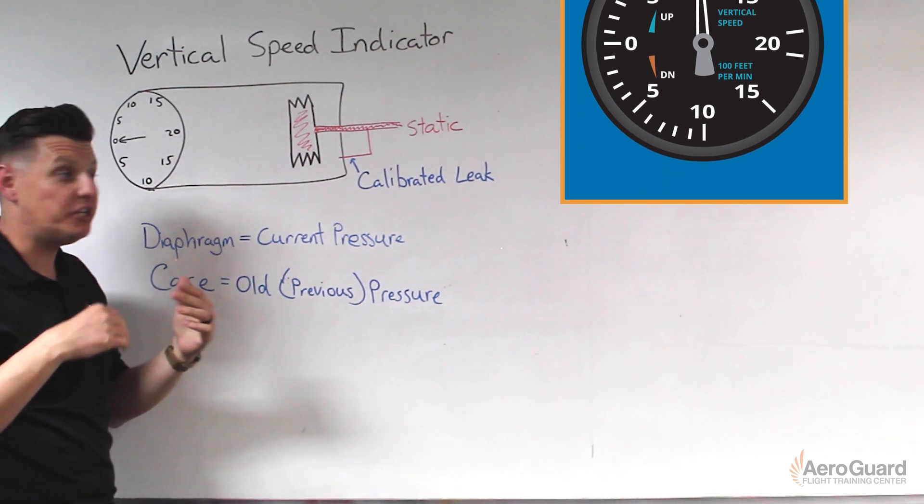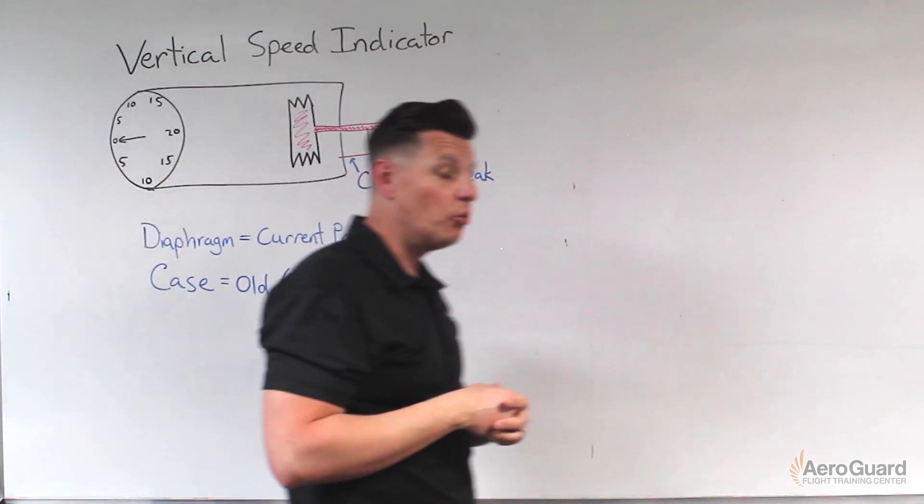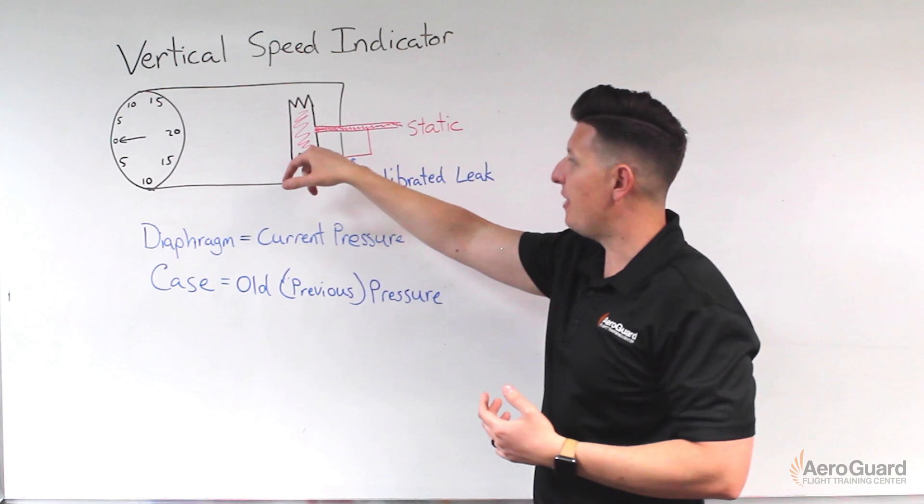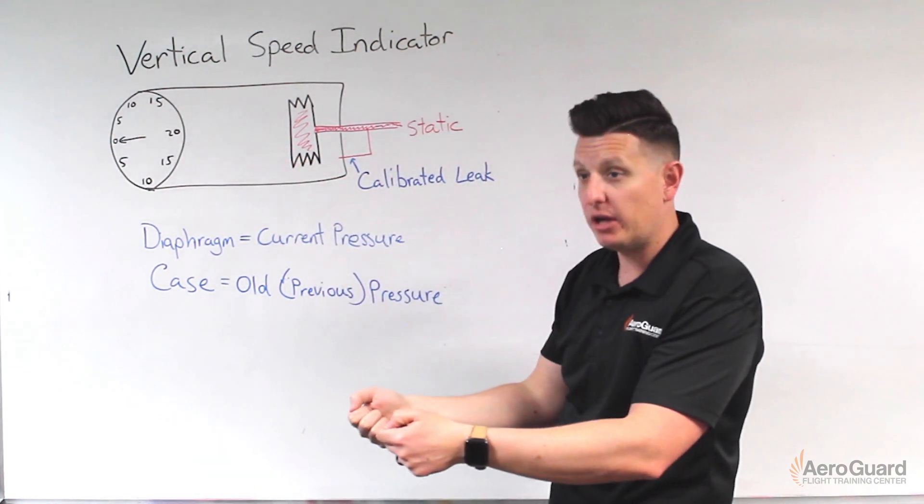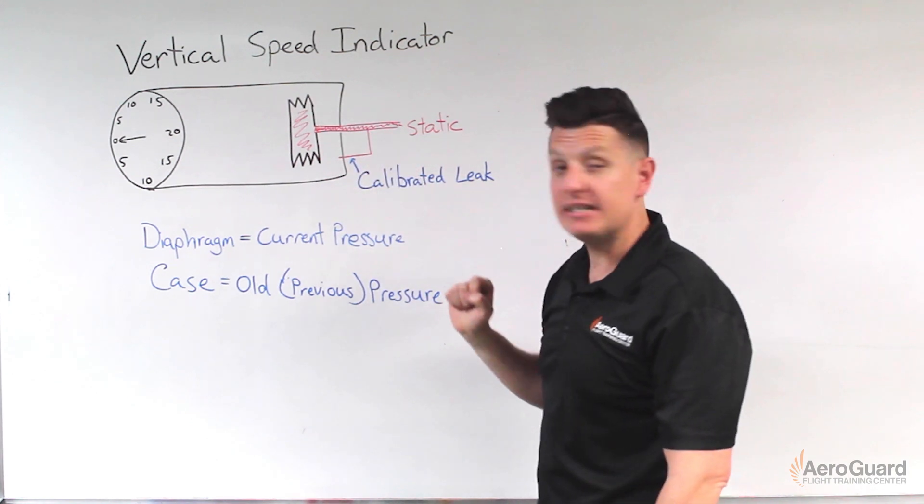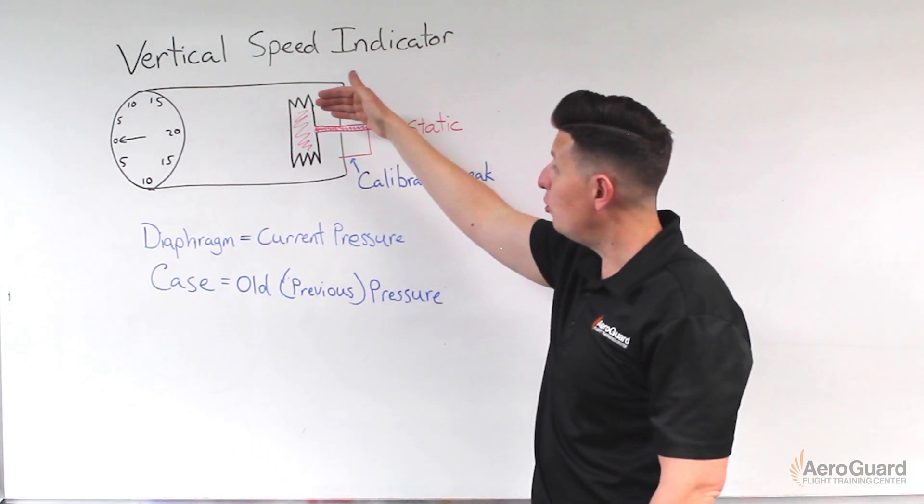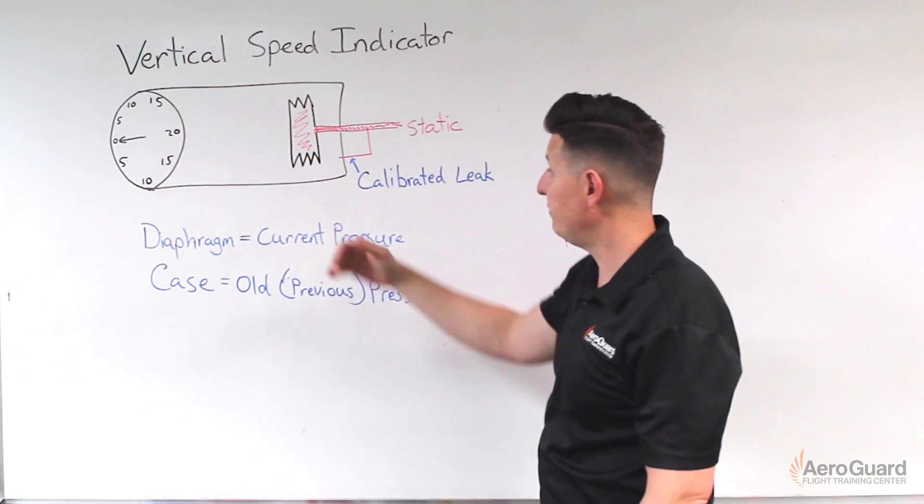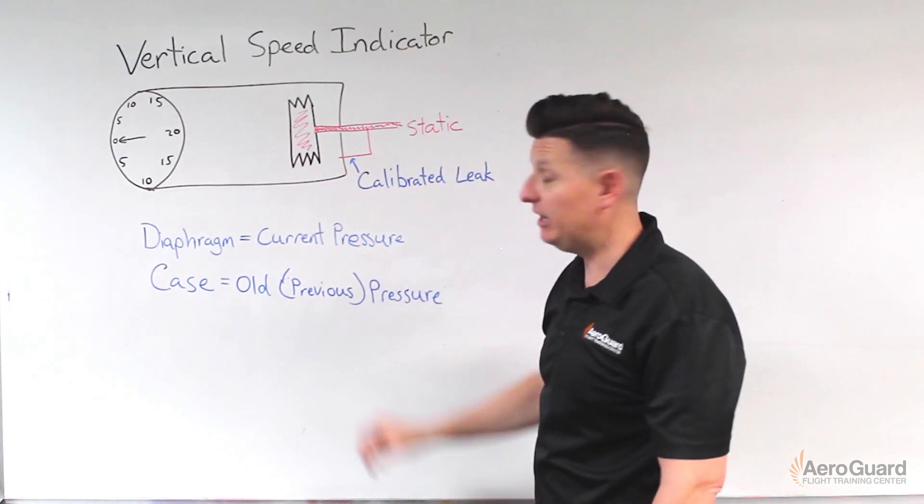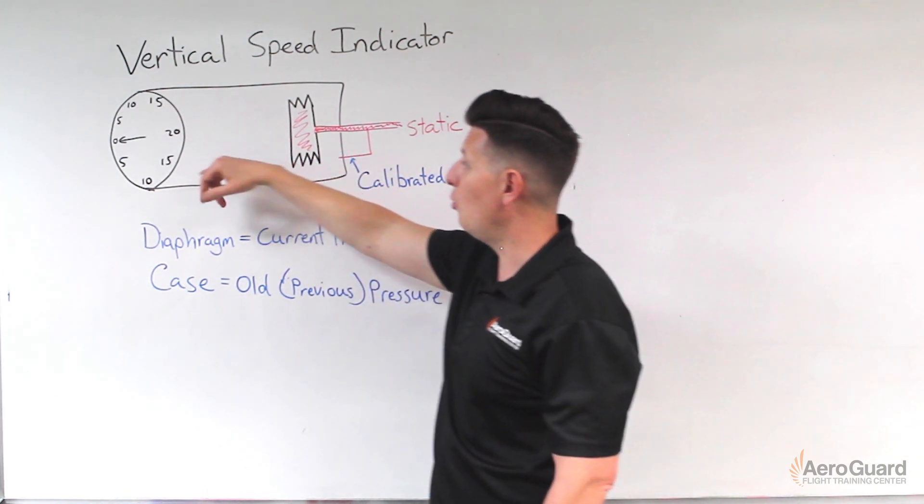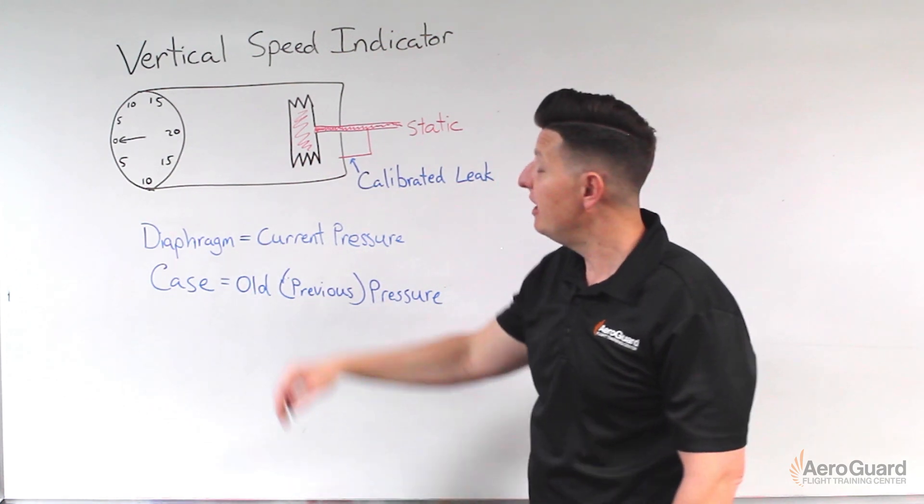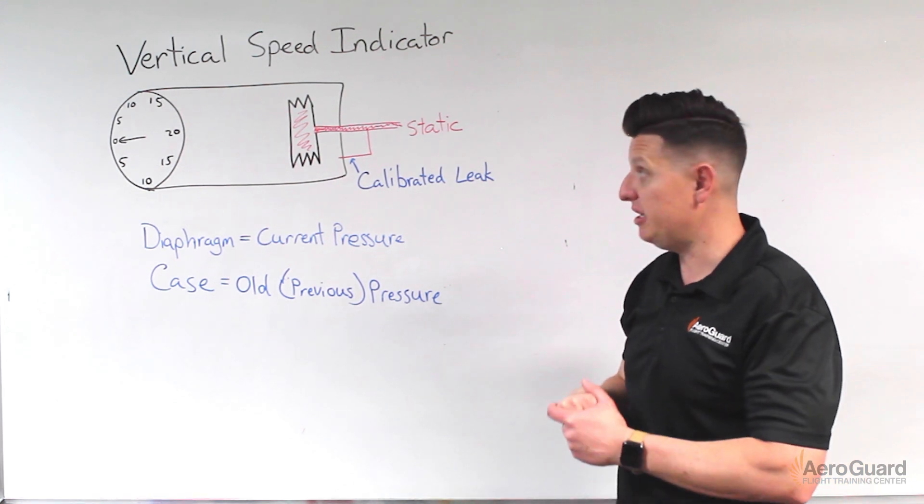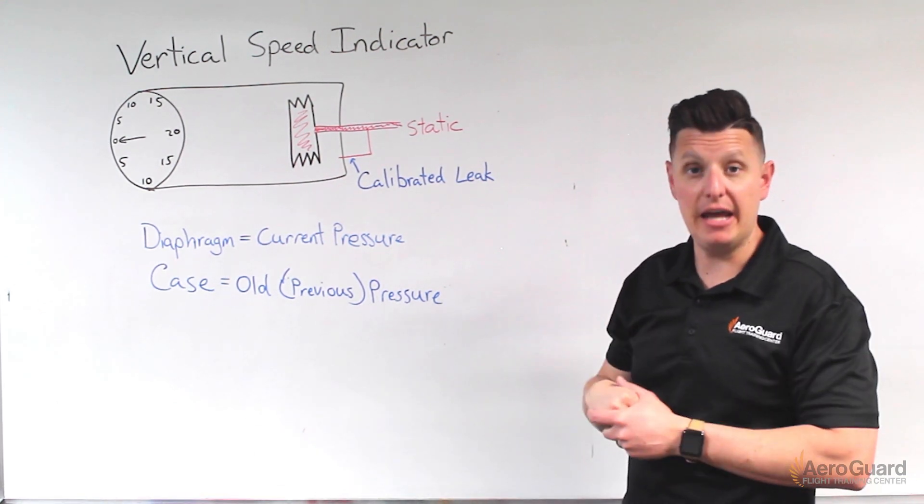Once we're stable at a particular rate of climb or rate of descent, these pressures are sort of matching together. When we initially start a descent, for example, the pressure inside the diaphragm would change immediately and that would cause the hand to move pretty aggressively up front. Then slowly the calibrated leak allows for this pressure to stabilize at whatever rate we're descending, and the result is it'll show us an appropriate indicated vertical speed. The same would be true obviously in a climb.